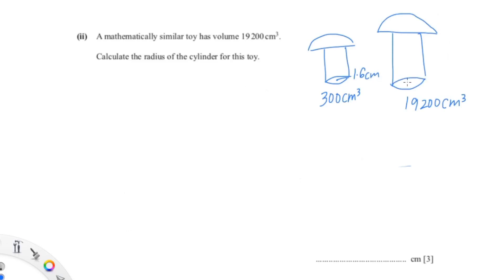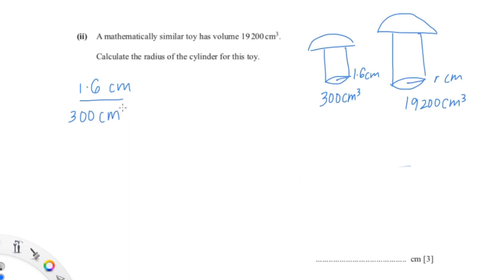For the similar cylinder, let's call the radius r. So we have all this information and we can write it as: 1.6 cm is to r cm as 300 cm³ is to 19,200 cm³.